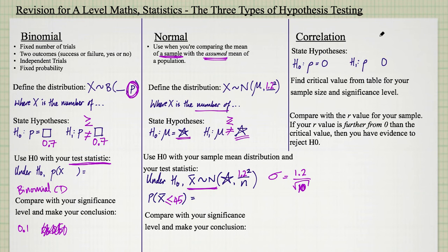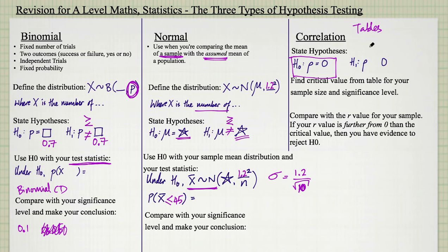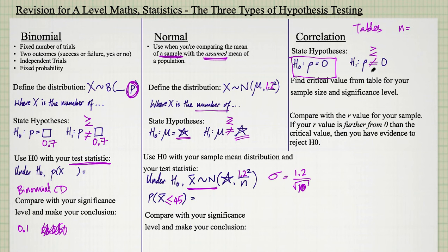Finally, hypothesis testing for correlation. This has exactly the same starting point every single time. Remember you're using rho rather than r. Your null hypothesis is always that there is no correlation between two variables — this is a very different type of test. You use the statistical tables provided in the exam with n, the number of data points, and the significance level. The alternative hypothesis is that there is some kind of correlation: positive (rho greater than zero), negative (rho less than zero), or any kind of correlation (rho not equal to zero). Not equal to means you split the significance level.